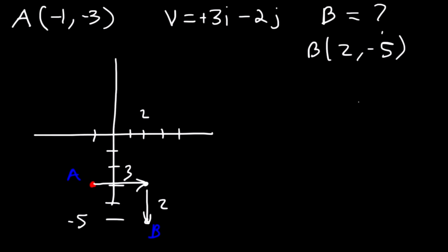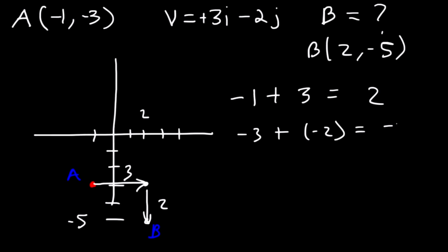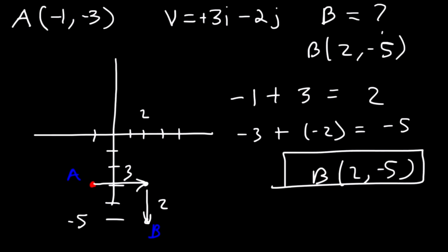Basically, if you have the initial point A and want to find the terminal point B, simply add the i component (3) to the x value (-1) and add the j component (-2) to the y value (-3), giving you the point (2, -5). That's how you find the terminal point from the initial point.